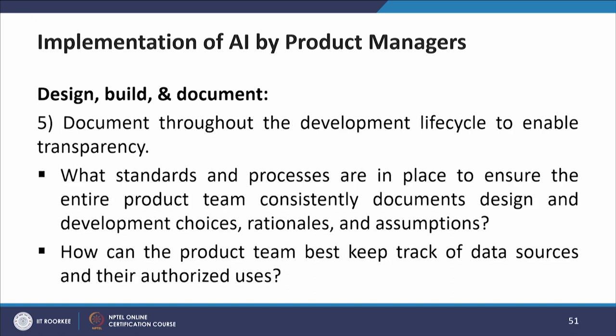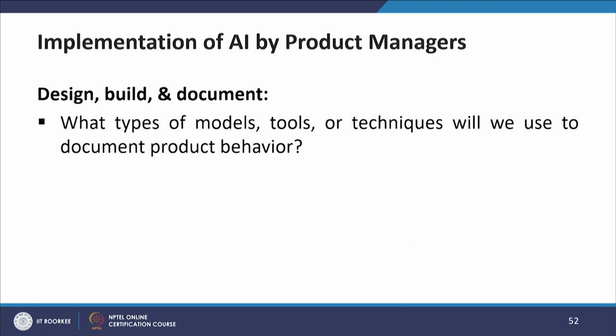The fifth step is to document throughout the development life cycle to enable transparency. Key questions: what standards and processes are in place to ensure the entire product team consistently documents design and development choices, rationales, and assumptions? How can the product team best keep track of data sources and their authorized users? What types of models, tools, or techniques will be used to document product behavior?